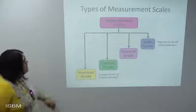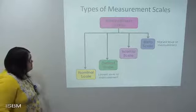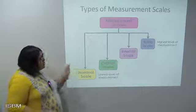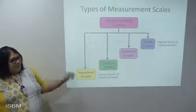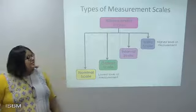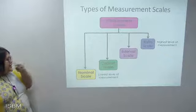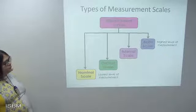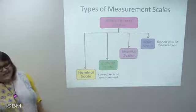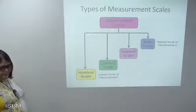Measurement scales are divided into four types: the nominal scale, the ordinal scale, the interval scale, and the ratio scale. The nominal scale represents the lowest level of measurement whereas the ratio scale represents the highest level of measurement.